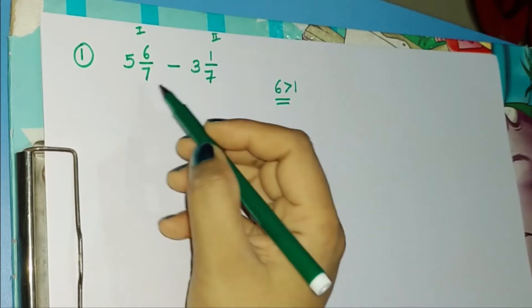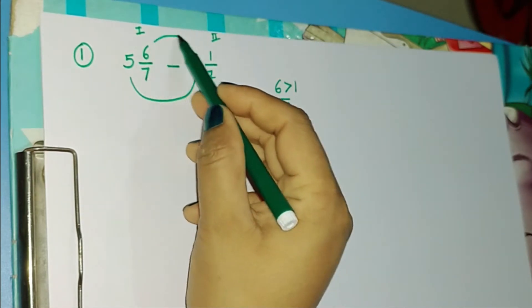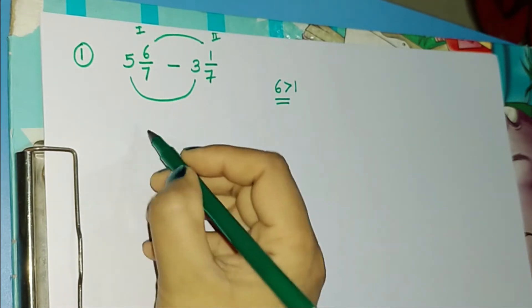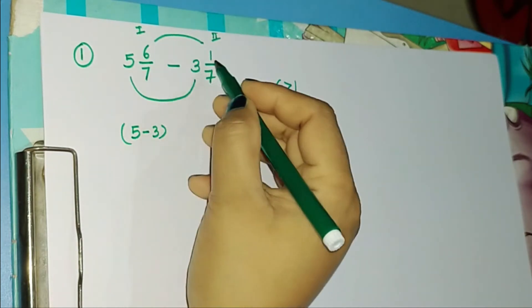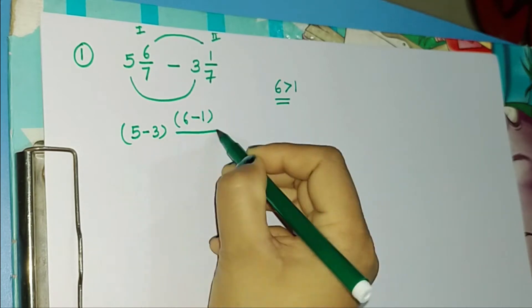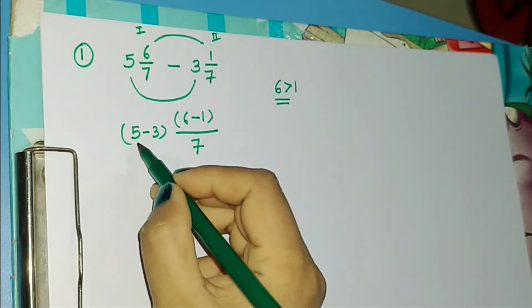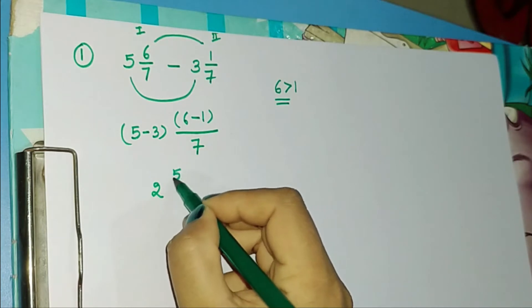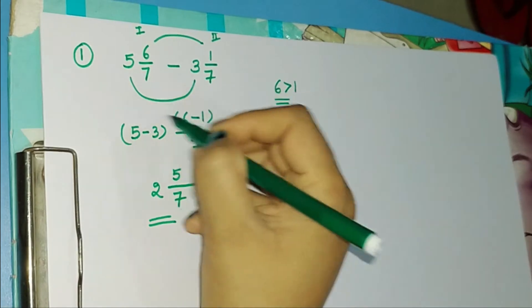So it is quite easy to solve this question. We simply need to subtract the whole part with the whole part, subtract the numerator with the numerator, and keep the denominator as it is. So we write 5 minus 3, then 6 minus 1, and keep the denominator the same. 5 minus 3 is 2, 6 minus 1 is 5, and the denominator stays the same. So our answer for this question is 2 5/7.